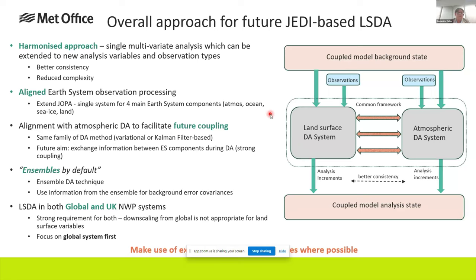We want to align our land surface DA better with the other system components. By extending JOPER for our observation processing, we'll end up with one single observation processing system for the four main Earth system components. More importantly, we want to align the DA with the atmosphere DA to facilitate future stronger coupling — using the same family of DA methods as the atmosphere, making it easier to exchange information between Earth system components during the DA. That's what these orange arrows are showing.